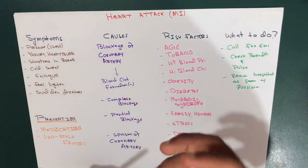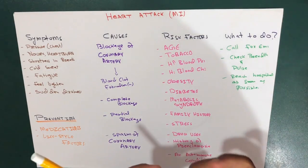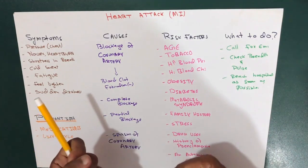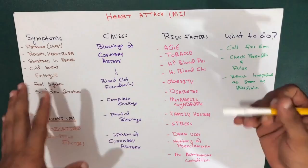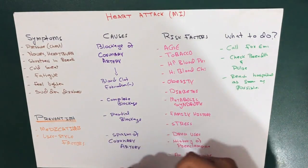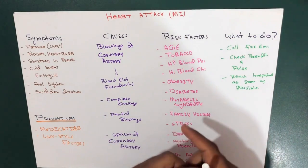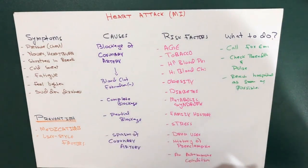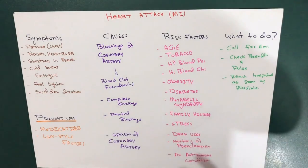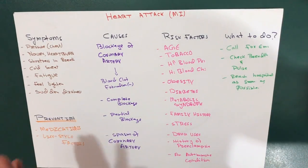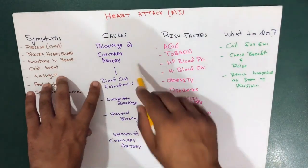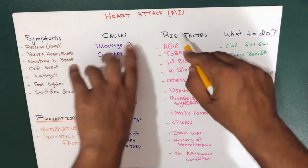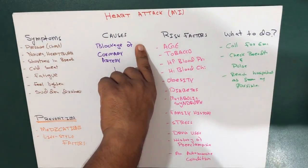Another cause of heart attack is a spasm of the coronary artery that shuts down blood flow to part of the heart muscle. Using tobacco and illicit drugs such as cocaine can cause a life-threatening spasm. Now let's move on to the risk factors.